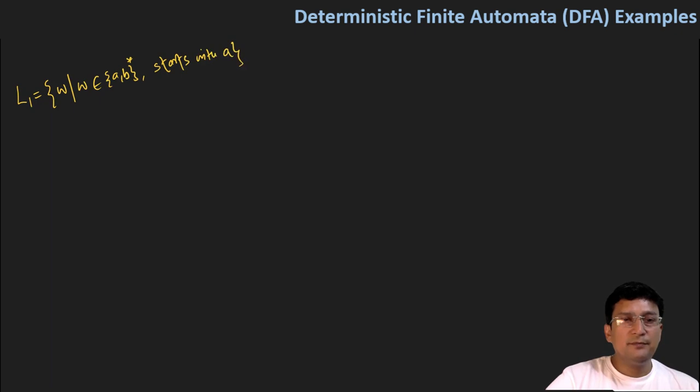Now the DFA for this will be that it starts with A. So the smallest string that can be accepted by this is small A. After this, either A comes or B comes, I don't mind.